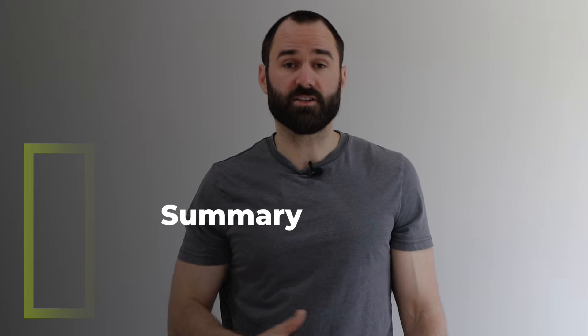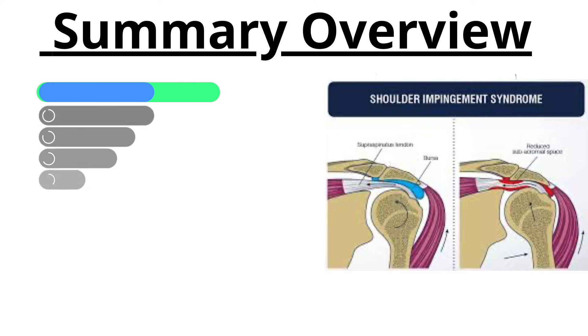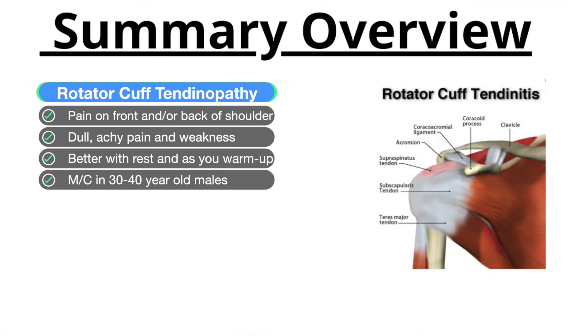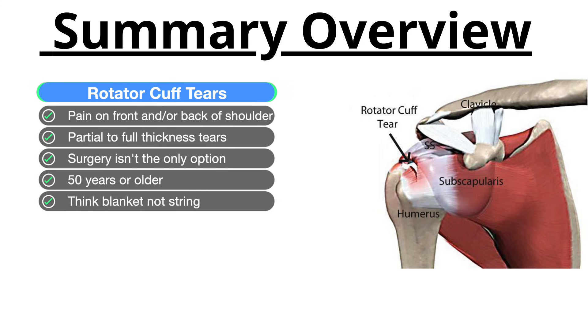Quick summary: For shoulder impingement, pain is on the anterior lateral part of the shoulder, most common in 20 year olds especially overhead or throwing athletes, and the pain is sharp and stabby. For rotator cuff tendinopathy, it's more of a dull ache, usually better with rest and a little better as you warm up, most common in 30-40 year old males, with associated pain and weakness. For rotator cuff tears, more prevalent in those 50 and older, often a throbbing or deep pain, with marked weakness for full thickness tears or mild weakness for partial tears. Remember with tears: think blanket, not rope — you can have a 10-20% tear and the blanket still functions, so we can exercise this condition.